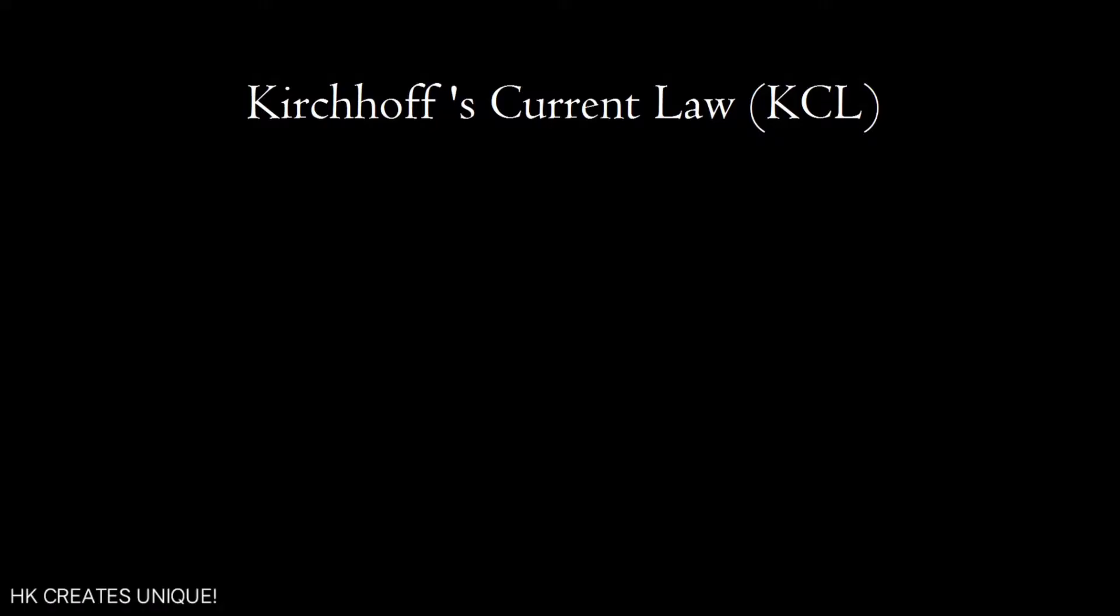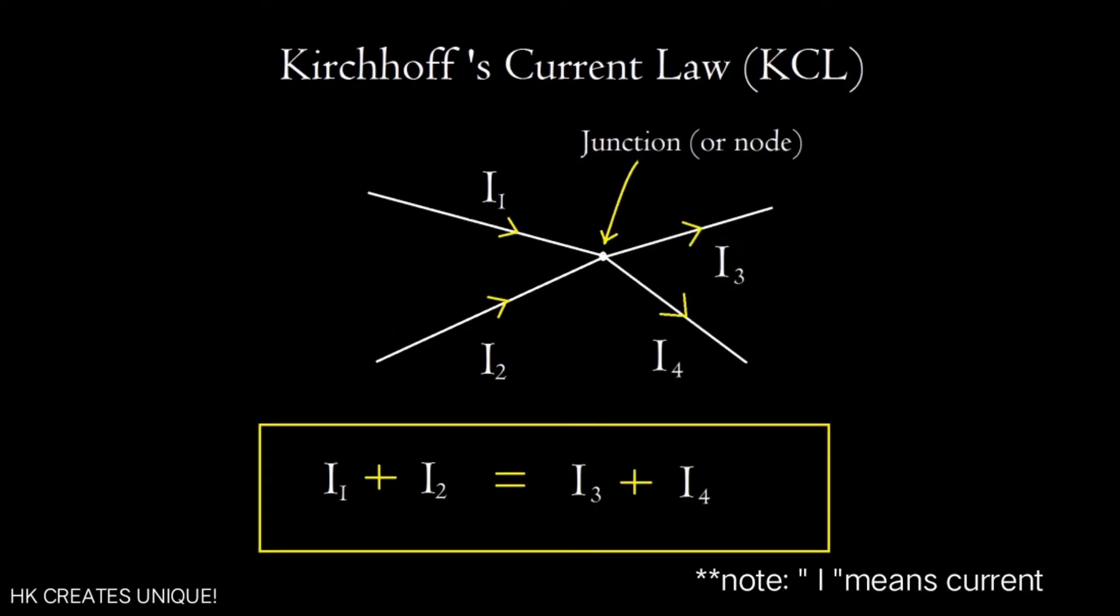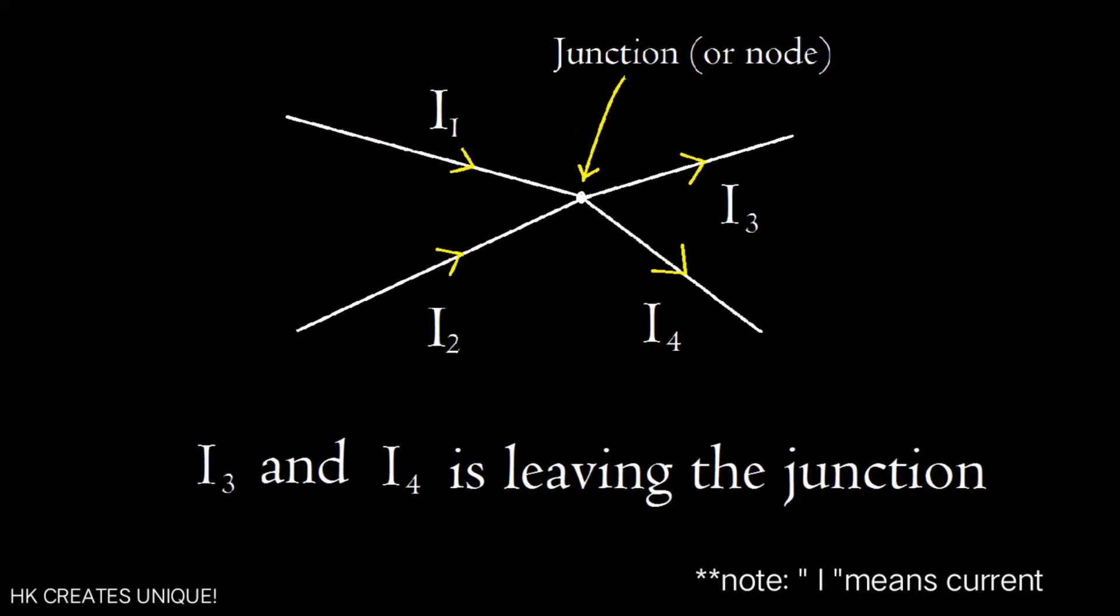Kirchhoff's current law states that the total current entering a junction is equal to the total current leaving the junction. Here current i1 and i2 is entering a junction, and current i3 and i4 is leaving the junction.